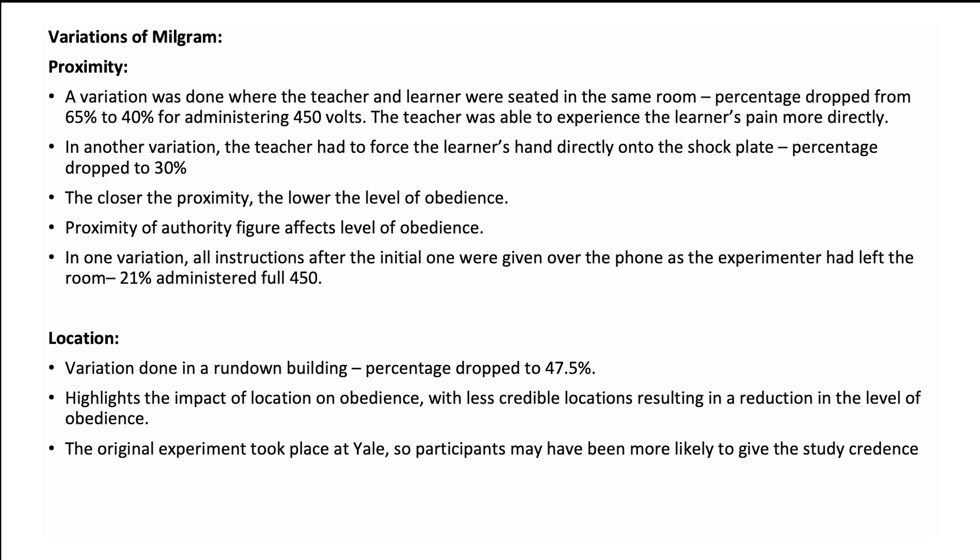There are three variations of Milgram that you need to be aware of, and the first one is proximity. A variation was completed where the teacher and the learner were seated in the same room; the percentage of obedience dropped from 65% to 40% for administering the full 450 volts, presumably because the teacher could experience the learner's pain more directly. In another variation, the teacher had to force the learner's hand directly onto the shock plate, and the percentage dropped further to 30%, showing that the closer the proximity of the teacher to the learner, the lower the level of obedience.